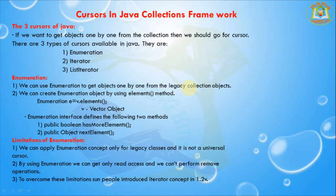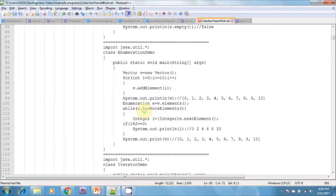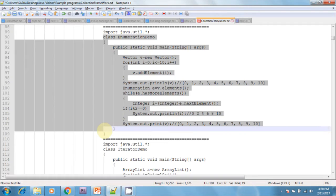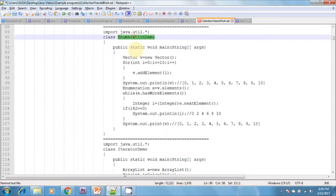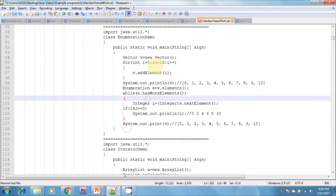Using the elements() method: Enumeration e = v.elements(). The Enumeration interface defines the following two methods: hasMoreElements() and nextElement(). nextElement() returns an Object, and hasMoreElements() returns a boolean value. Now I will show one example for Enumeration. I am creating a class called EnumerationDemo with a main method.